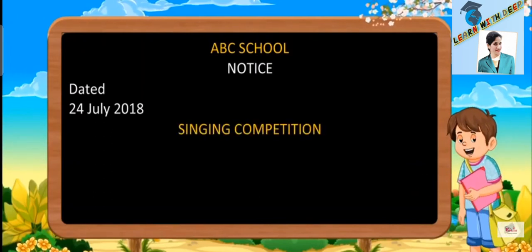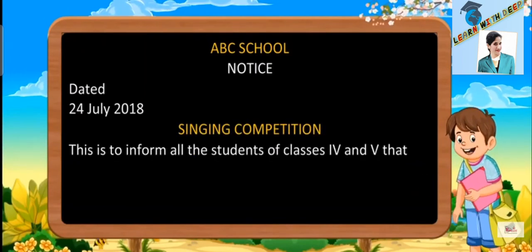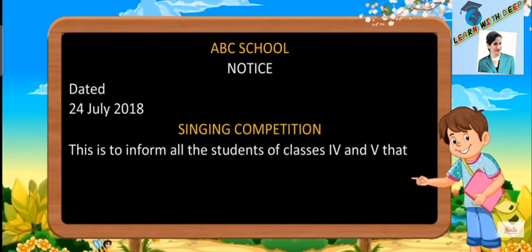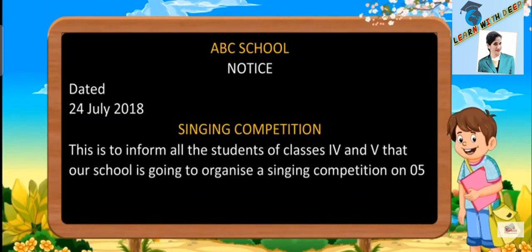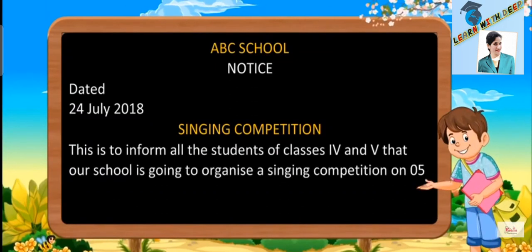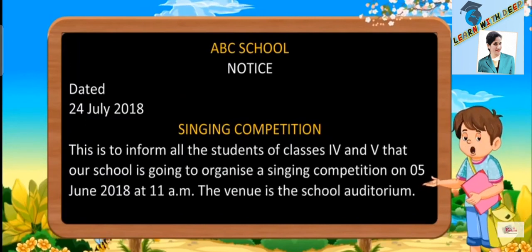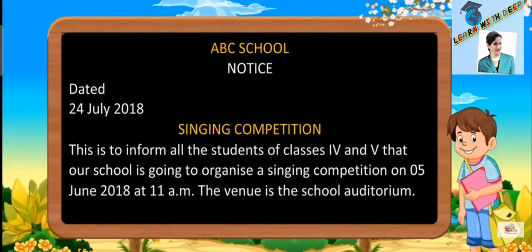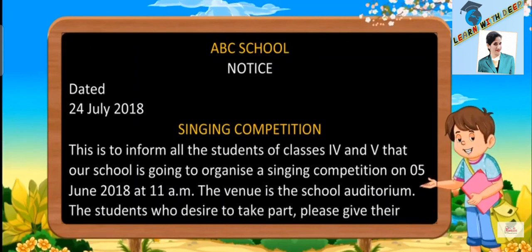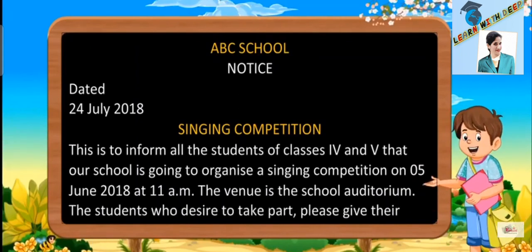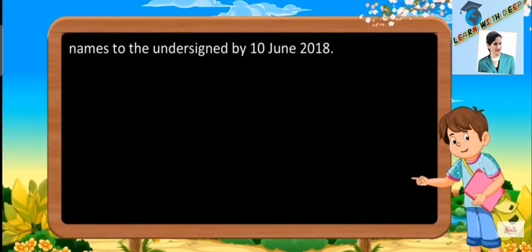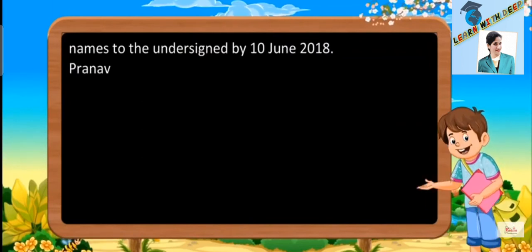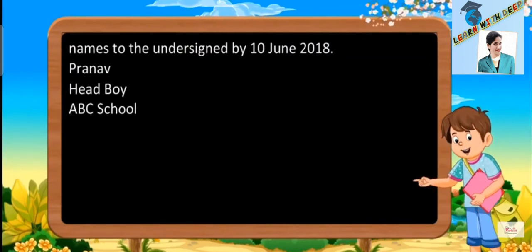Singing Competition. This is to inform all the students of classes 4th and 5th that our school is going to organize a singing competition on 5th June 2018 at 11 am. The venue is the school auditorium. The students who desire to take part please give their names to the undersigned by 10th June 2018. Pranav, Head Boy, ABC school.